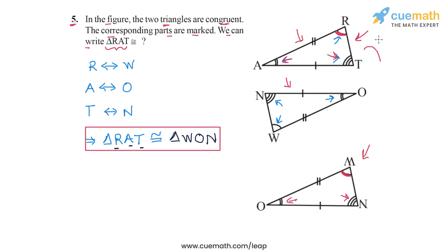So by comparing this first triangle and this reoriented second triangle, it's easy to see that RAT, if you take triangle RAT, the congruence relation can be written as WON, just by comparing the vertices one by one.